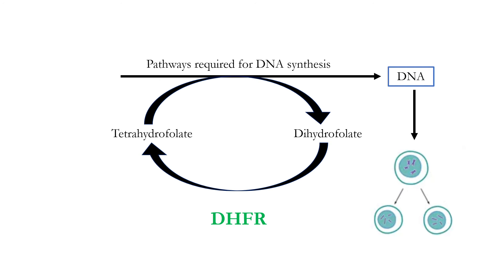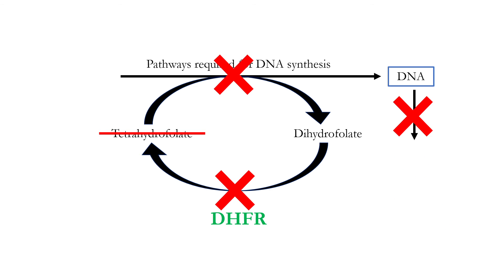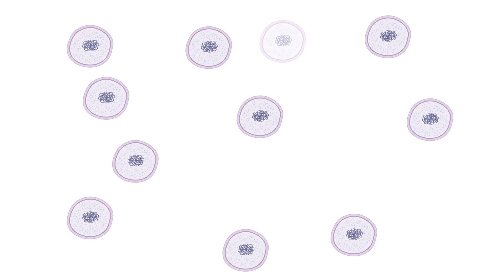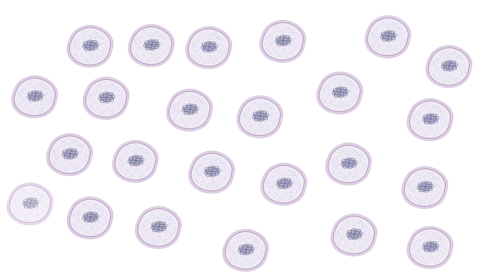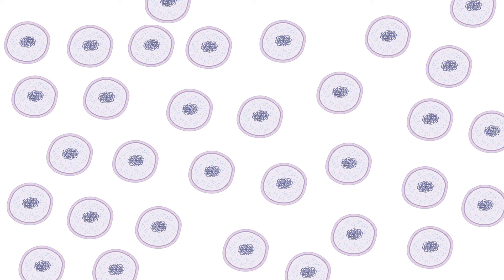We've already discussed that dihydrofolate reductase is essential for the pathways involved in DNA synthesis, since it's every cell's only source of tetrahydrofolate. If the mechanism of DHFR were inhibited in humans, we'd be unable to produce tetrahydrofolate, which would stop our DNA synthesis pathways and therefore stop cell division. For this reason, DHFR has great clinical significance. Because cancer cells divide more rapidly than most healthy cells in the human body, inhibiting the catalytic action of DHFR can prevent them from replicating, therefore killing cancerous cells.